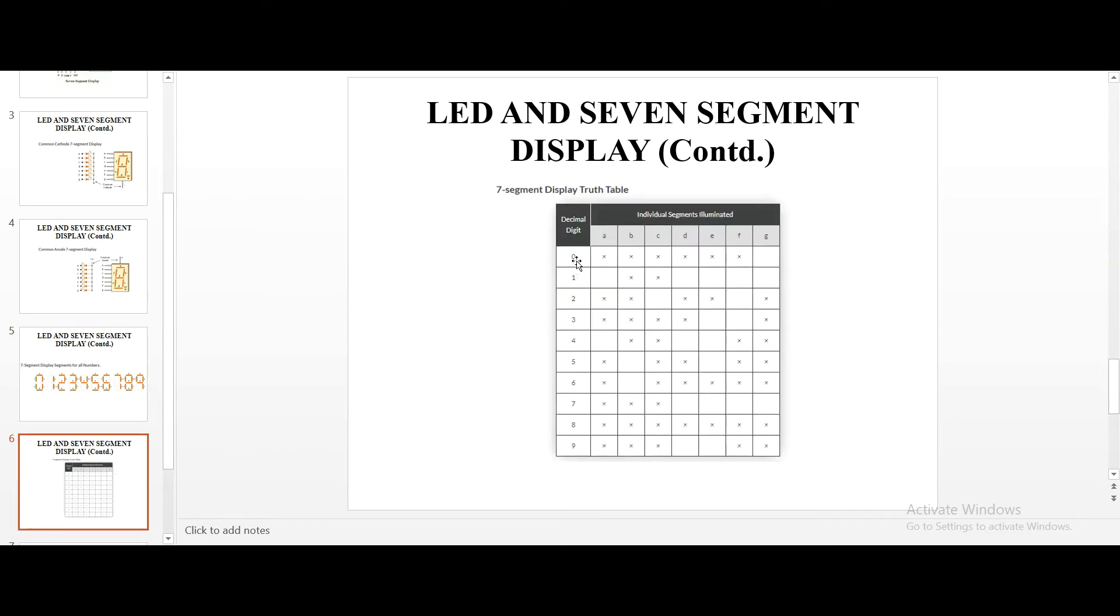Here, you can see the truth table of a 7 segment display. What is known by truth table? You know about truth table and or gate. And gate truth table 0, 0, 0, 0, 1, 0, 1, 1, 1 will come. 1, 0, 0 will come. Or gate similarly, the truth table will come.